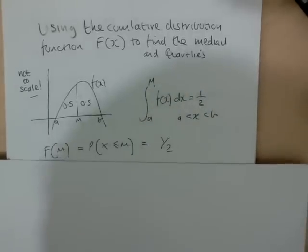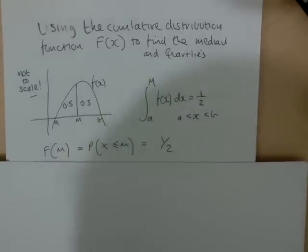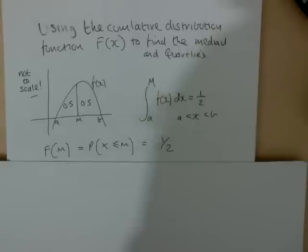And that's what I've stated here: F(m) equals the probability that x is less than m equals a half.